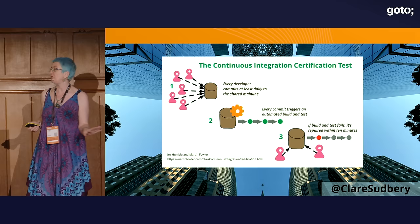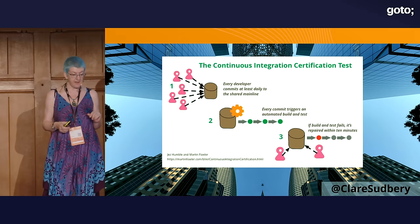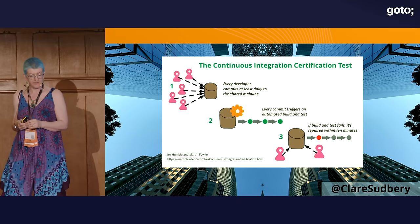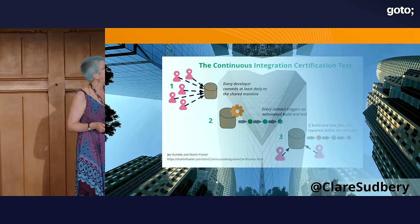According to Jez, if you don't pass those tests, you're not doing Continuous Integration. Continuous Integration means every developer commits at least daily to a shared main branch, every commit triggers an automated build and test, and if the build and test fails, it's repaired within 10 minutes.